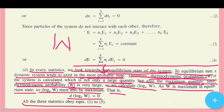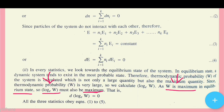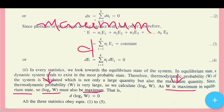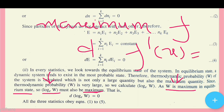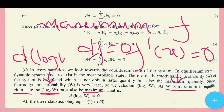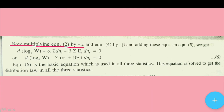All three statistics obey equations 1 through 5. To find the maximum of a function, we set its differential equal to zero. Since log W is also a maximum, d(log W) = 0. Now, multiplying equation 2 by minus alpha and equation 4 by minus beta, and adding these to equation 5, we apply the Lagrange multiplier method.